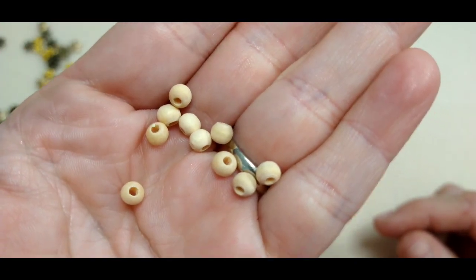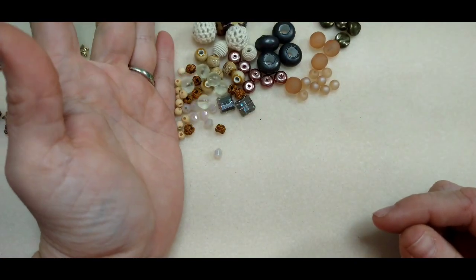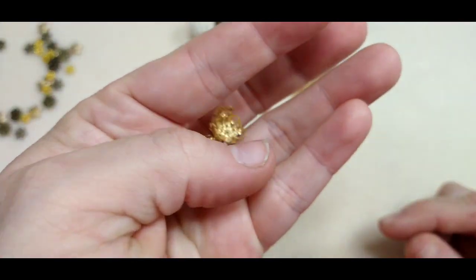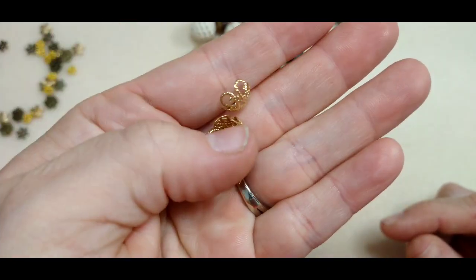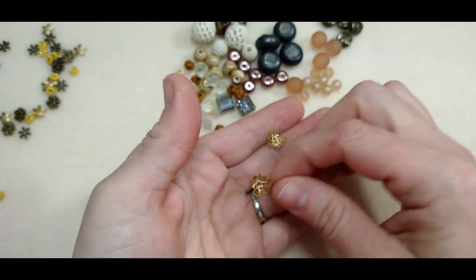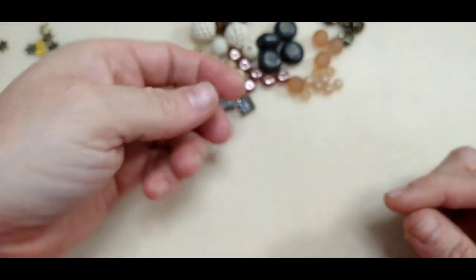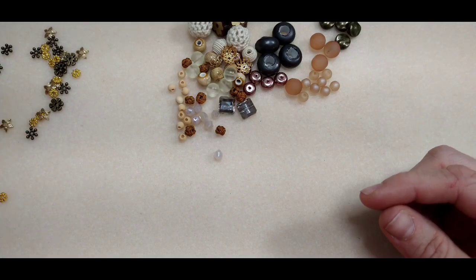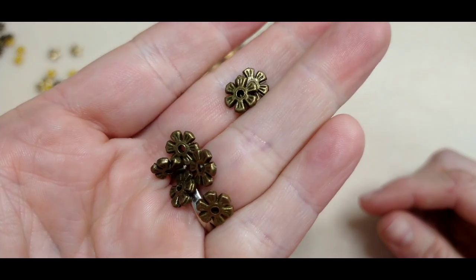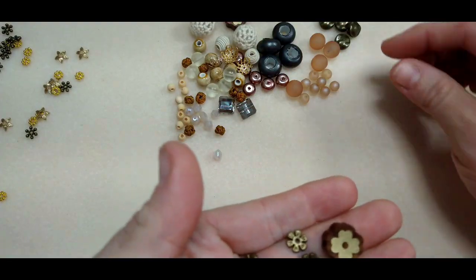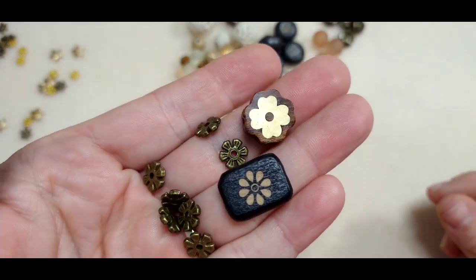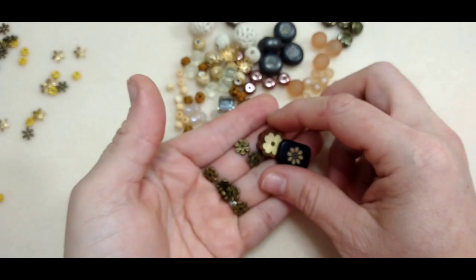We've got some filigree bead caps in gold. There's four of them there, one's wanting to nestle inside the other one, but there's four. Okay, we've got these really cute little flower spacer beads. I love these, and look how well they go with this. They go with that and that. Look at that, just perfect. Couldn't ask for a closer match, so cute.